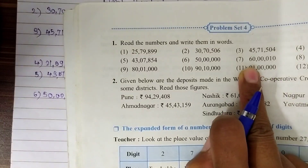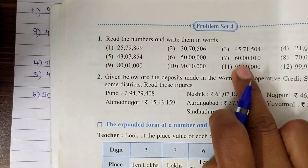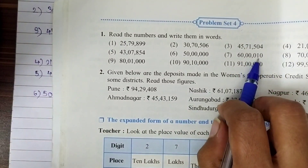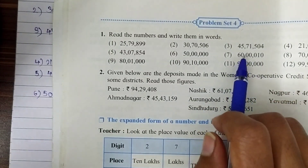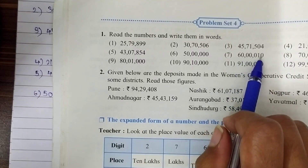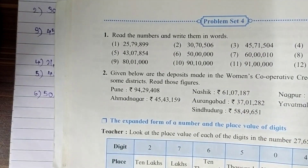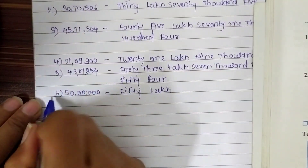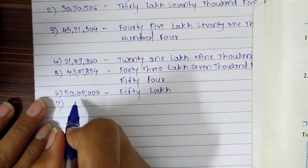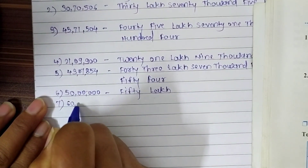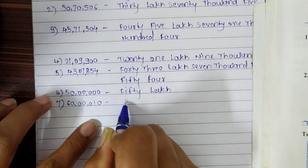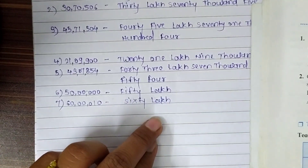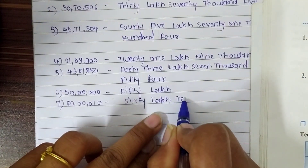The 7th question: the number has digits only in the ten-lakh place and the tens place. So this number is 60,00,010 — sixty lakh and ten. Write it in words.